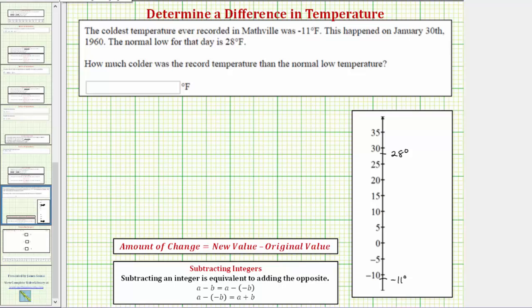And let's go ahead and break this up into two parts. 28 degrees to zero degrees would be 28 degrees. And zero degrees to negative 11 degrees would be another 11 degrees. And because 28 plus 11 is equal to 39...